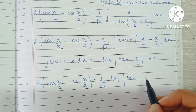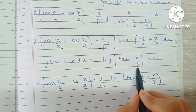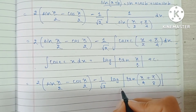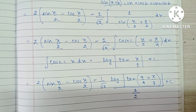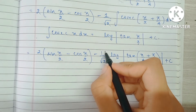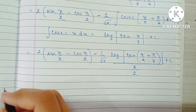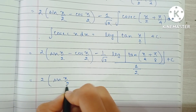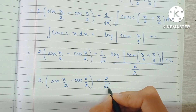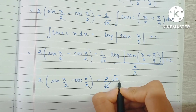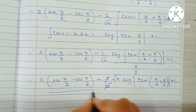Since the coefficient of x is 1/2, we divide by 1/2, bringing 2 up to the numerator. Combining the result: 2 sin(x/2) minus cos(x/2) minus, then bringing 2/√2 = √2 out in front, we get the final answer: 2 sin(x/2) minus 2 cos(x/2) minus √2 · log|tan(x/4 + π/8)| + C.